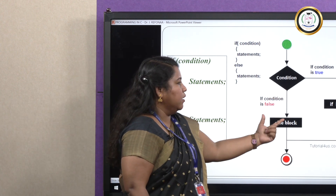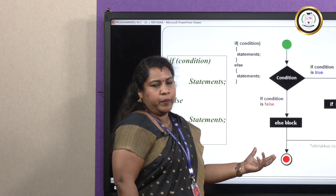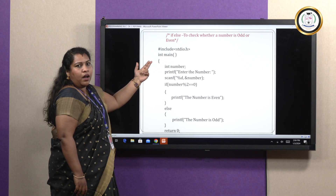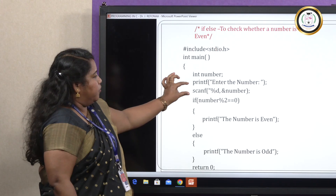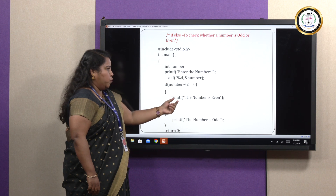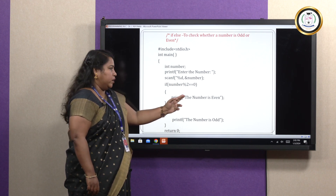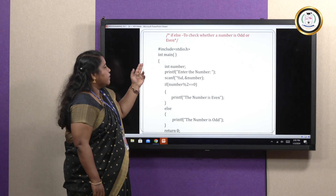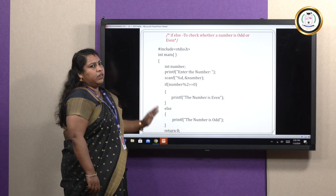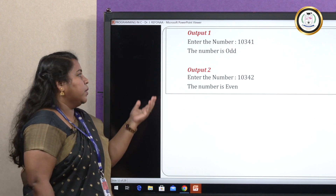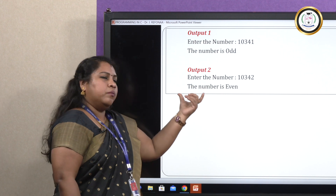Looking at the flowchart: the condition is given, if it is true the true block will be executed, else the false block will be executed. Here is an example program to check whether the number is odd or even. We have the header file, main function, and we get the number using scanf. When the condition number modulo 2 equal to equal to 0 is true, it prints 'the number is even'. If the condition is false, it prints 'the number is odd'. Since we use int main, we use the return statement. Giving input 10341, which is an odd number, it prints 'the given number is odd'. Giving 10342, which is even, the true statement is executed.